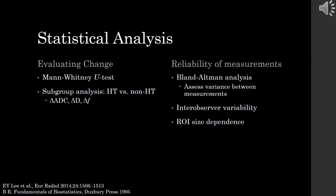For statistical analysis, we split this into two parts. The first part dealt with evaluating radiation-induced changes in DWI and IVIM metrics. We used the Mann-Whitney U test and subgroup analysis to see if there were any significant differences in the changes in ADC, D, and F between HT and non-HT patients. The second part dealt with the reliability of measurements, where we used Bland-Altman analysis, a method of assessing variance between measurements, looking at inter-observer variability and ROI size dependence and its effects on our DWI and IVIM measurements.